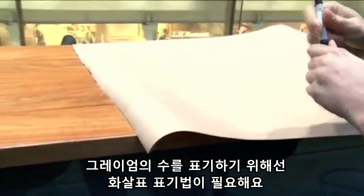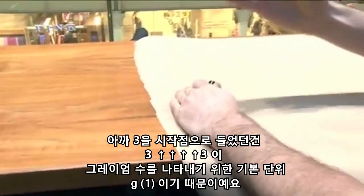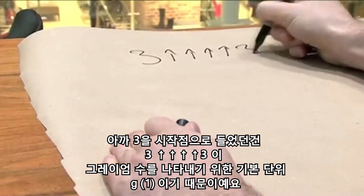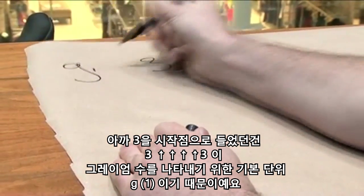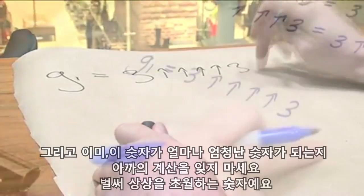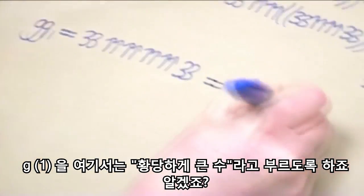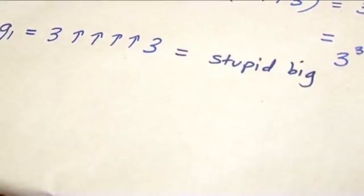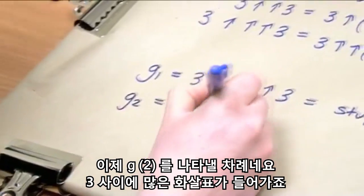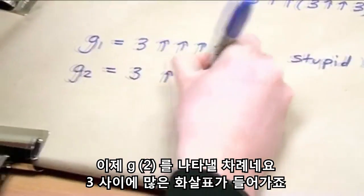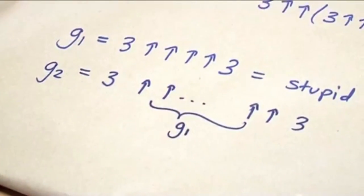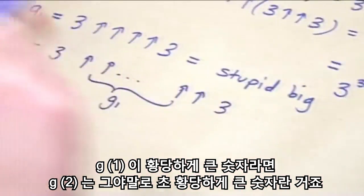To actually build Graham's number, we use arrow notation starting with three. You write 3 with four arrows — 3↑↑↑↑3 — and call that G1. Already, don't forget how mind-boggling that number was. This is already off the chart — call it stupidly big. Then G2 is a 3 with G1 arrows. So if G1 was stupidly big, G2 is stupidly, stupidly big.